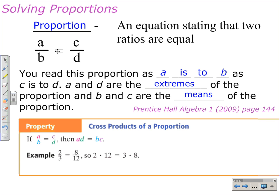A and D are what we call the extremes of the proportion. And B and C are the means.